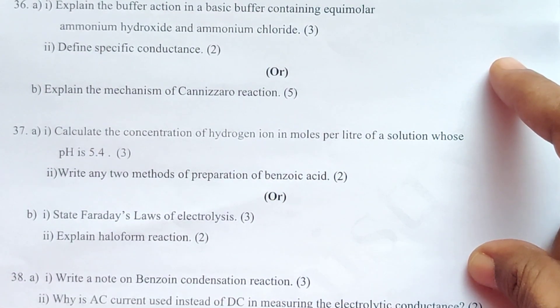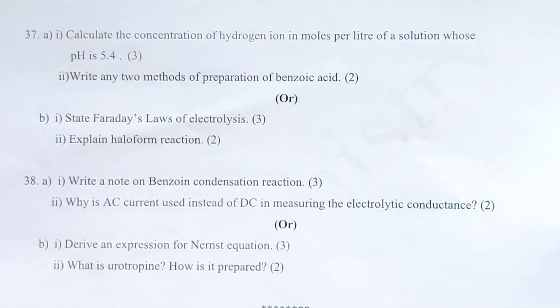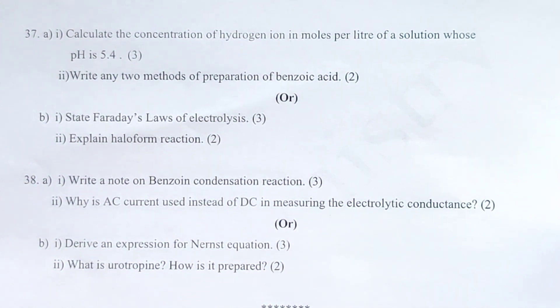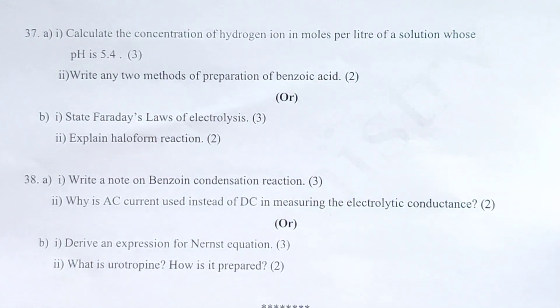38. a) i) Write a note on benzoin condensation reaction. ii) Why is AC current used instead of DC in measuring the electrolytic conductance? Or, derive an expression for Nernst equation. 39. What is urotropine and how is it prepared?